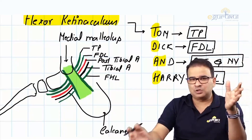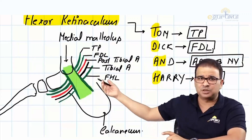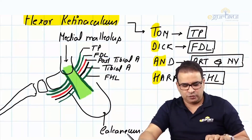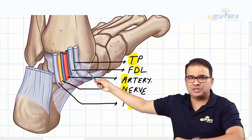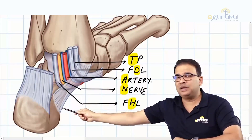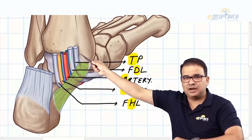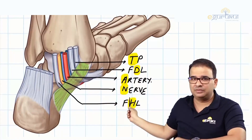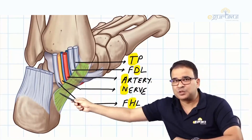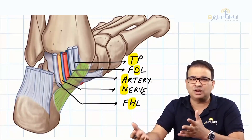Let me show you the atlas picture to correlate — note the image shown is a mirror image of the other foot. You can see the flexor retinaculum attaching to the medial malleolus and to the medial surface of the calcaneus. The structures visible are: tibialis posterior tendon, then flexor digitorum longus, then the posterior tibial artery, the tibial nerve, and most posteriorly, flexor hallucis longus.